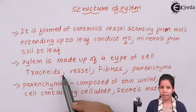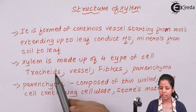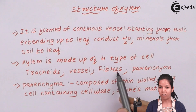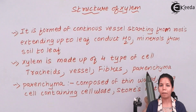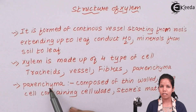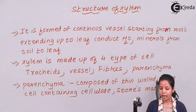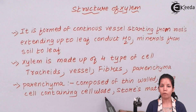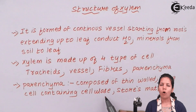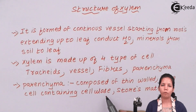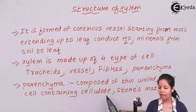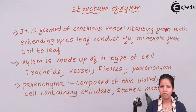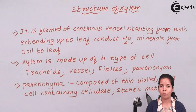Xylem is made up of four different types of cells: tracheids, vessels, fibers, and parenchyma cells. Parenchyma cells are basically thin-walled living cells made up of cellulose. All wood — the basic component of wood — is cellulose, from which paper is also made. The main function of parenchyma is to store materials, basically ions when they are absorbed from the soil.